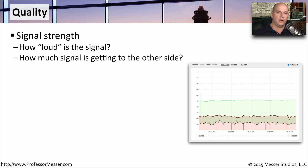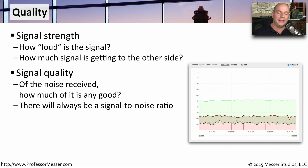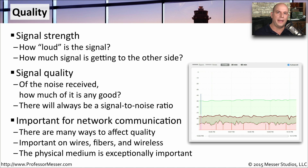Another concern with sending data over our network is the quality of that signal. One measure of quality is how loud the signal is — the strength of the signal overall. Whether we are sending information through copper, fiber, or over a wireless connection, we need to be able to hear the signal once it finally gets to us. The signal itself needs to be of a high quality — we need to be able not only to hear it, but to hear it over the other noises that are occurring, especially over something like a wireless network. We often call this the signal-to-noise ratio, so we can get our signal just above the noise level so that it can be heard by the other side. There are many different ways to affect signal quality — we can change out connectors, use different types of fiber, or even change out the type of antennas we're using on our wireless connections.